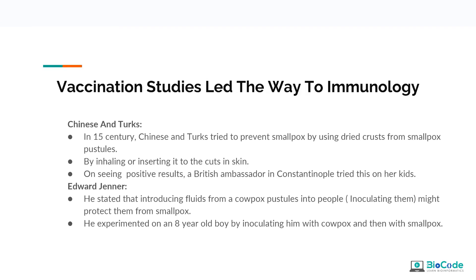Edward Jenner reasoned that introducing fluid from a cowpox pustule into people might protect them from smallpox. He inoculated an eight-year-old boy with fluids from a cowpox pustule and later intentionally infected the child with smallpox. As he predicted, the child did not develop smallpox.